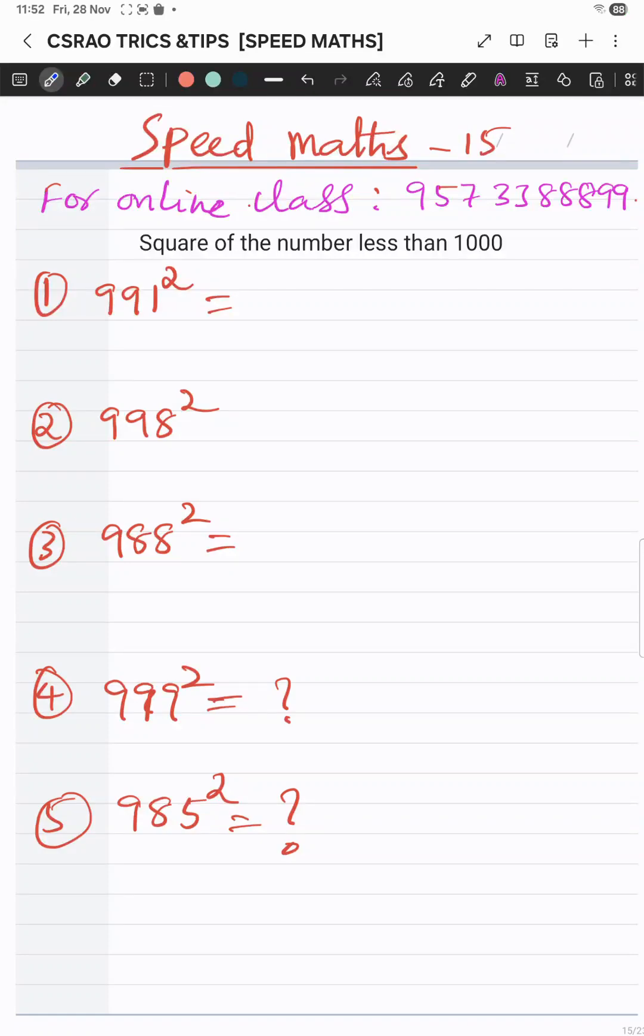Namaste everyone, today we are going to teach the square of the number less than 1000. Here, base is 1000. Now how much is it less than 1000? It is 009. We have to subtract. Less than means you have to subtract. Now you have to subtract this one: 9. 982, nine eighty-two. Now square of the 009 is 081.